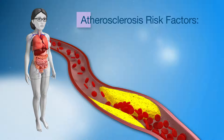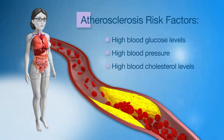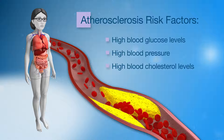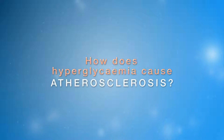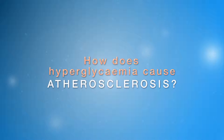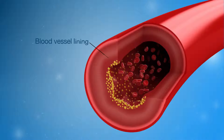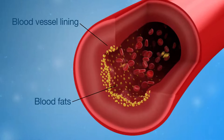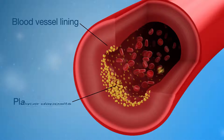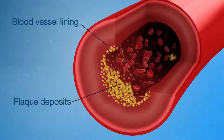The risk factors for atherosclerosis include high blood glucose levels, high blood pressure and high blood cholesterol levels. High blood glucose levels can change the inner lining of our blood vessels, allowing blood fats and other particles to enter the cells of the blood vessel over time. This process causes inflammation leading to the development of plaque deposits and atherosclerosis.